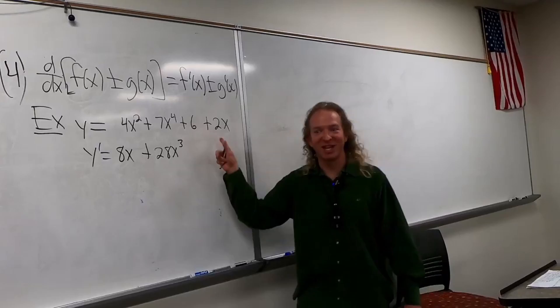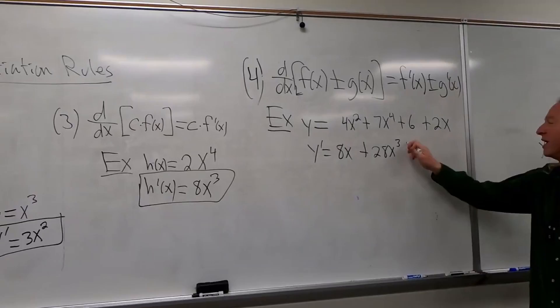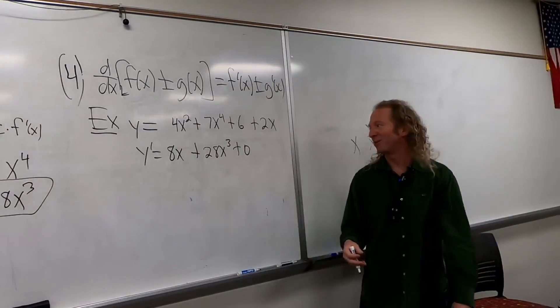What's the derivative of 6? Zero. Yeah, I'm not going to write it, but it's 0, so it's gone. So I'll write it, I'll write it. But it's 0, right? You don't have to write it on a test.